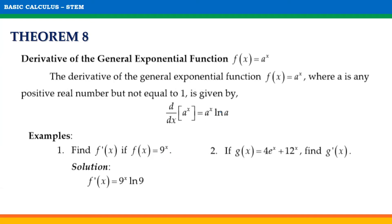Another example. If g of x is equal to 4e raised to x plus 12 raised to x, find g prime of x. g prime of x is equal to 4e raised to x plus 12 raised to x times ln 12.